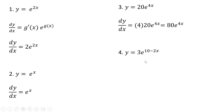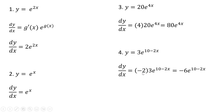Example 4: the derivative of 10 minus 2x is minus 2. So that minus 2 comes down in front, and then that's multiplied by the original function. We can simplify it by taking minus 2 and multiplying it by 3 to get minus 6.